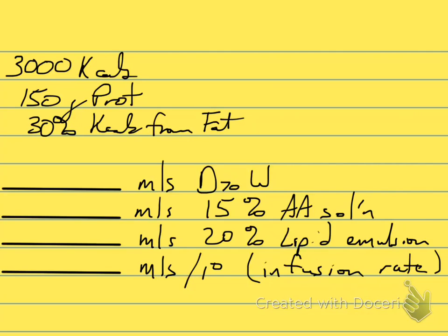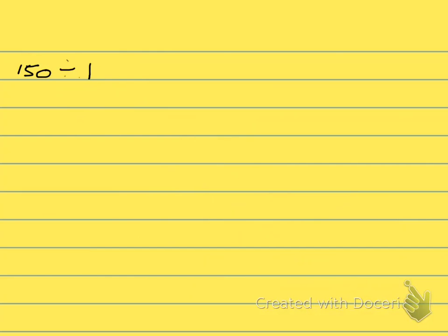After we determine the volumes of each of those, we will calculate the infusion rate. To start off with, if we know that we need 150 grams of protein and we're using 15% amino acid, we simply divide 150 by 0.15, and we end up with 1,000 mL of 15% amino acid solution.